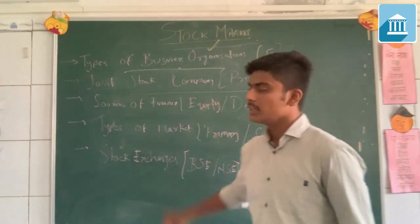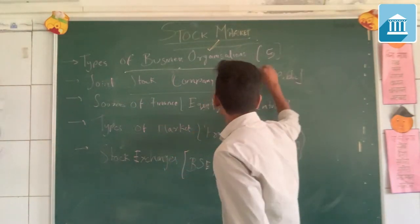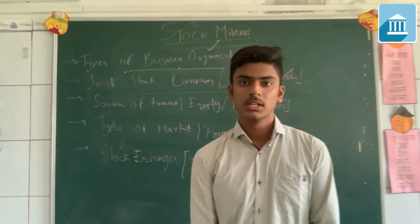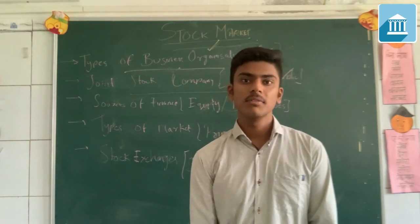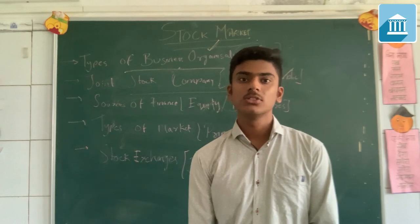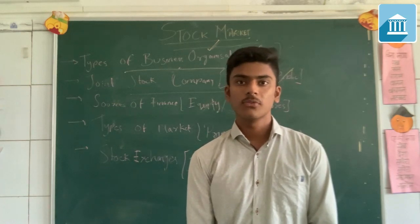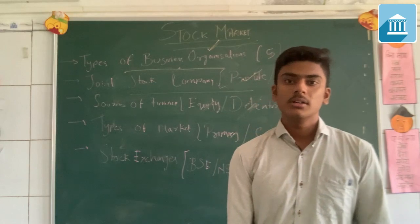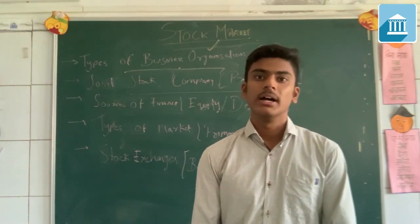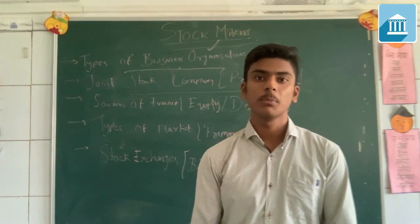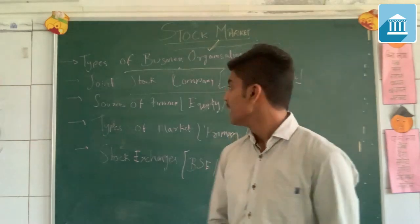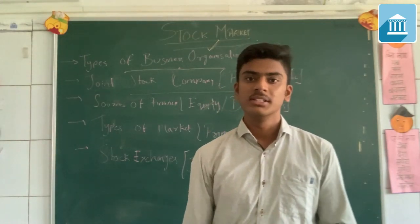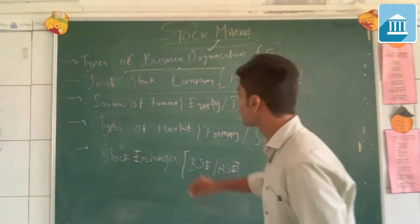A joint stock company is of two types: private and public. A company which is carried on by a group of individuals is known as a private company, and a company which is carried on by the government is known as a public company. The main aim of a public company is to develop the country and make welfare for the population, while the main aim of a private company is to contribute to the GDP of the country.